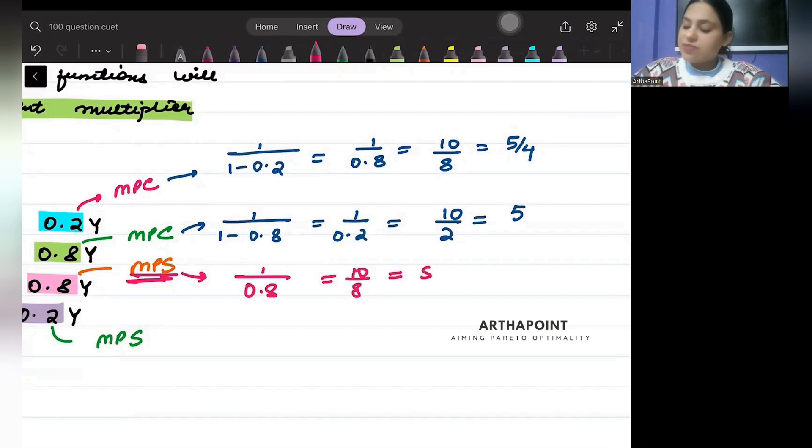What will be MPS from here? 1/(1 - 0.2)... 1/0.2 because this is MPS, so 10/2 = 5.